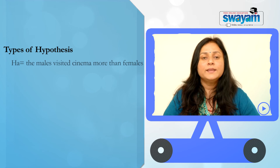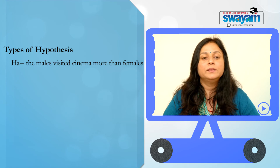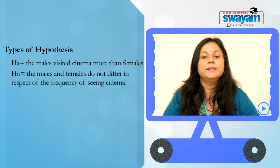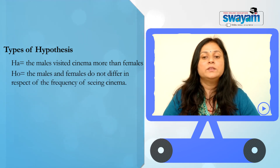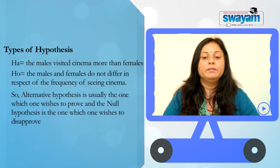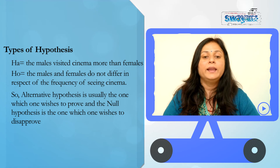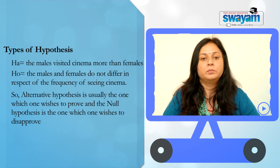Rejecting the null hypothesis suggests that the alternative hypothesis may be true. For example, the alternative hypothesis is that males visited cinema more than females, and the null hypothesis is that males and females do not differ in respect of the frequency of seeing cinema. The alternative hypothesis is usually the one which one wishes to prove, and the null hypothesis is the one which one wishes to disapprove.